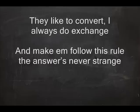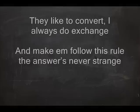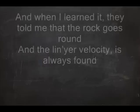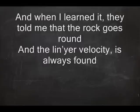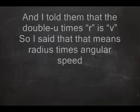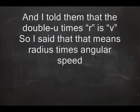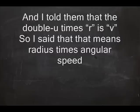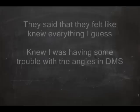They like to convert, I always do exchange. And make them follow this rule, the answer's never strange. And when I learned it, they told me that the rock goes round. And the linear velocity is always found. I told them that ω times r is v, so that means radius times angular speed.